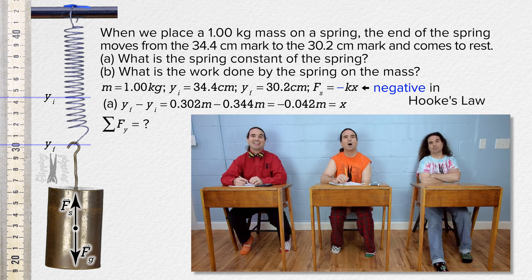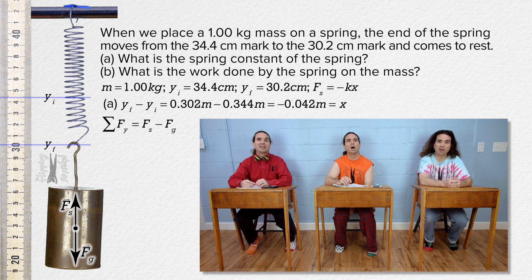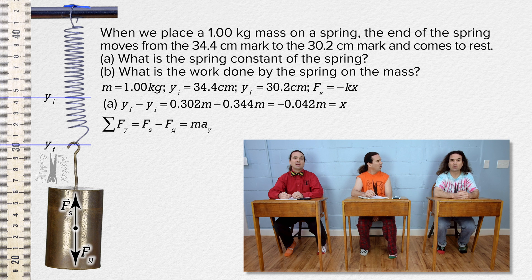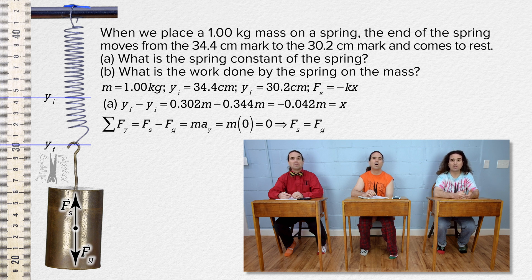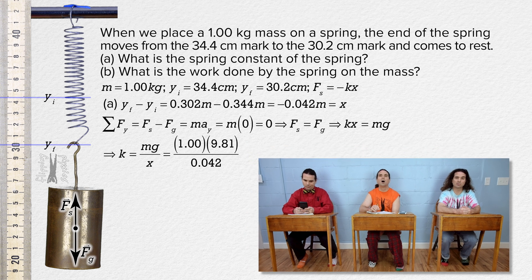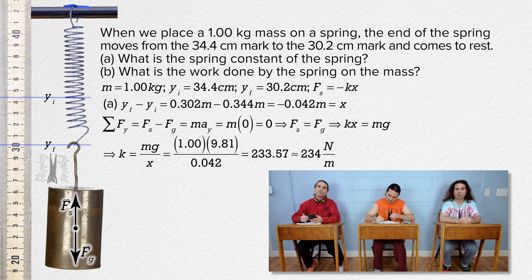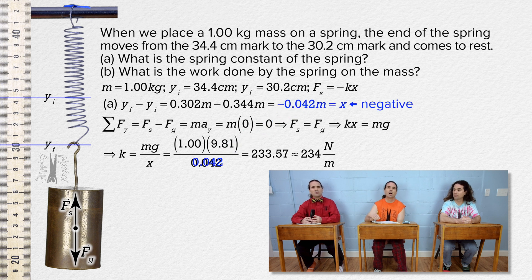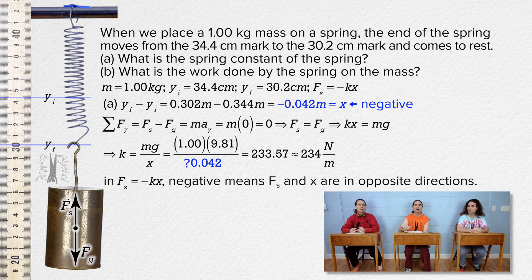Correct, Billy. Bo, please keep going. The net force in the y direction equals the spring force minus force of gravity. The net force also equals mass times acceleration in the y direction. The mass is at rest, so its acceleration equals zero, meaning the spring force equals the force of gravity. Substituting in equations gives us the spring constant times displacement from equilibrium equals mass times acceleration due to gravity. We can solve for the spring constant and substitute in numbers to get 1 times 9.81 over 0.042, which equals 233.57 or 234 newtons per meter with 3 sig figs. The negative sign was already accounted for when we drew the free body diagram and decided up was positive.